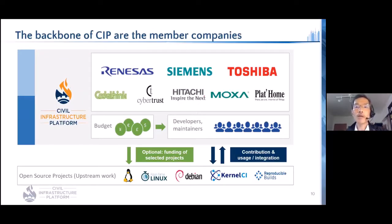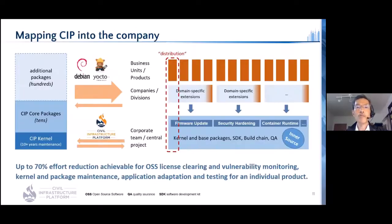Currently, there are eight member companies in CIP, actively working on those activities. Annual membership fees are pooled as budget and used to support maintainers and developers. The budget is also used to invest in projects other than CIP. One member company reported that up to 70% effort reduction can be achieved by applying CIP across entire organizations, because activities like OSS license clearing, vulnerability monitoring, kernel and package maintenance can be commonized instead of being done separately.